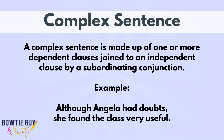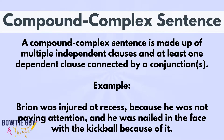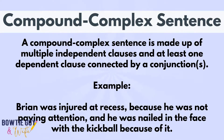A subordinating conjunction indicates the role of the dependent clause. A compound-complex sentence is made up of multiple independent clauses or ideas, and at least one dependent clause connected by a conjunction or conjunctions. For example: Brian was injured at recess because he was not paying attention, and he was nailed in the face with the kickball because of it.